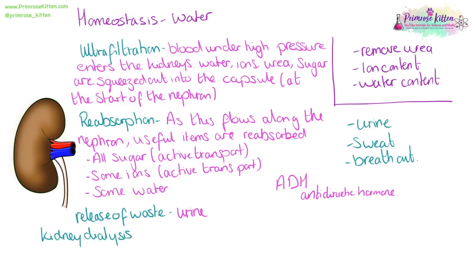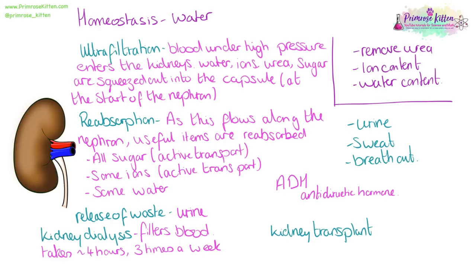If kidneys aren't working properly, a person can undergo kidney dialysis, where a dialysis machine takes over kidney function. This is very time-consuming — about four hours, three times a week — with a huge impact on quality of life. An alternative is a kidney transplant, but these come with very long waiting lists and the risk of rejection.